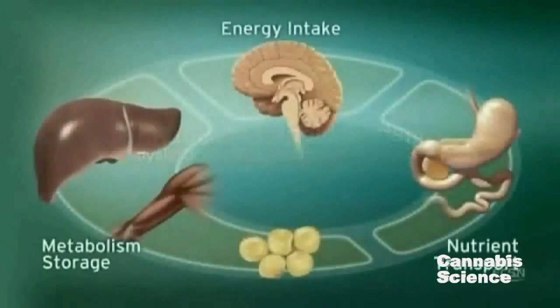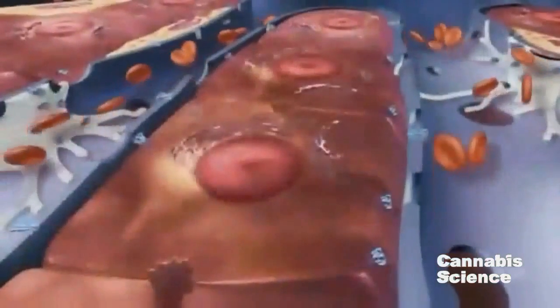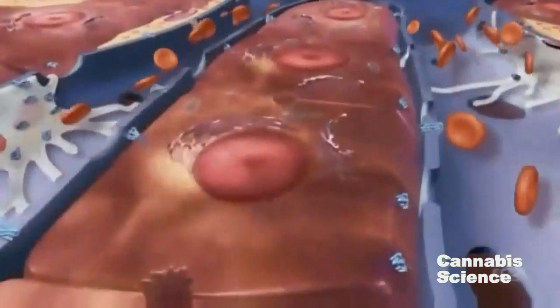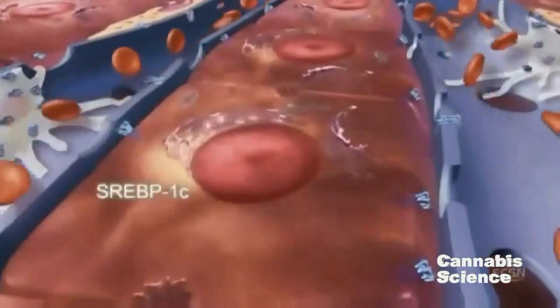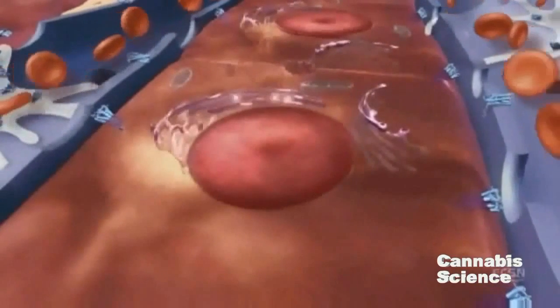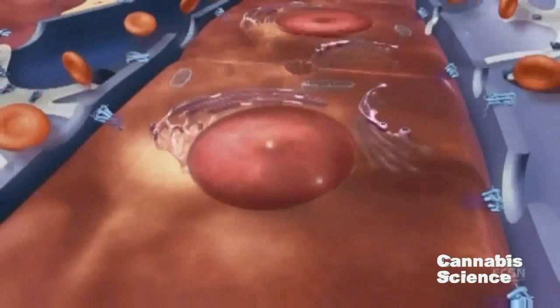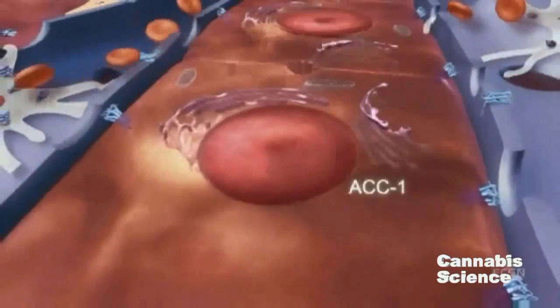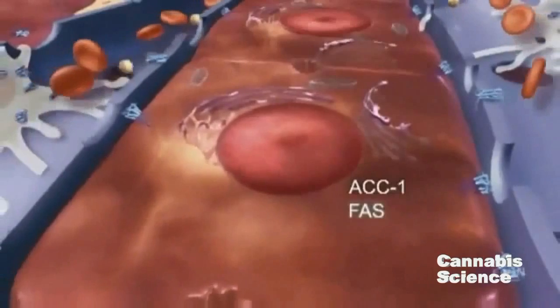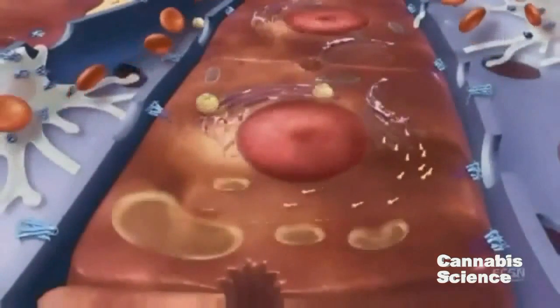Chronic stimulation of the ECS is associated with dyslipidemia. Activation of CB1 receptors increases expression of SREBP1C, a lipogenic transcription factor, and increases fatty acid synthesis. SREBP1C increases production of lipogenic enzymes ACC1 and fatty acid synthase. Increased fatty acid synthesis can lead to production of large triglyceride-rich VLDL.